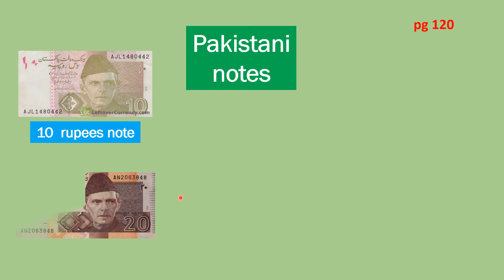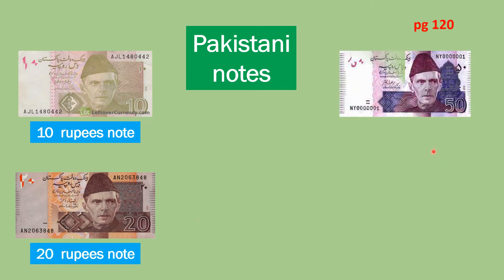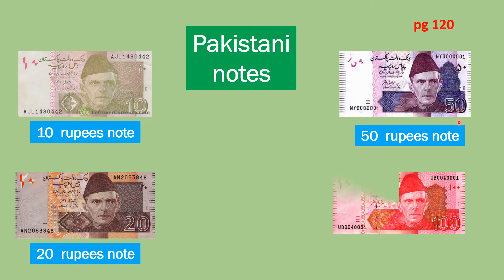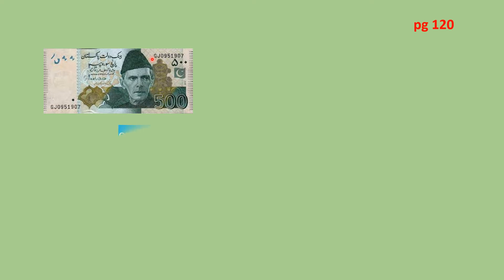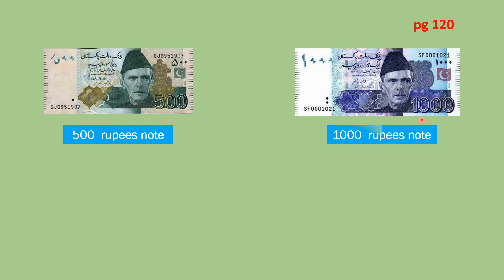Next, we have a 20 rupees note — it is brown in color. Next, we have a 50 rupees note — it is purple in color. Next, we have a 100 rupees note — it is red in color. Next, we have a 500 rupees note — it is green in color. Next, we have a 1000 rupees note — it is blue in color.